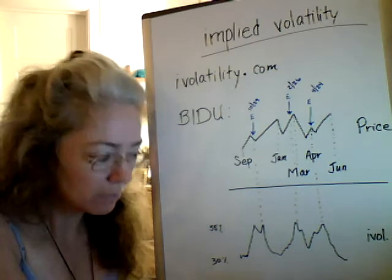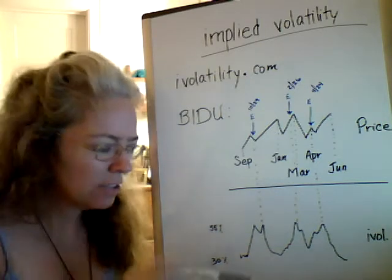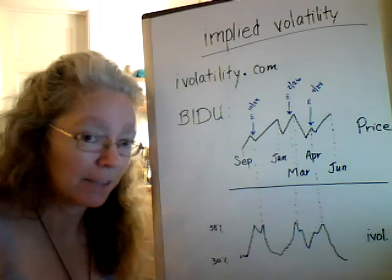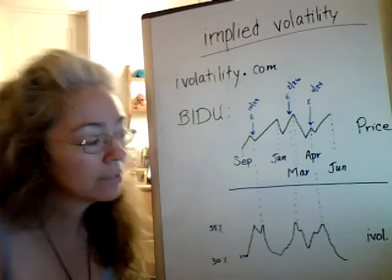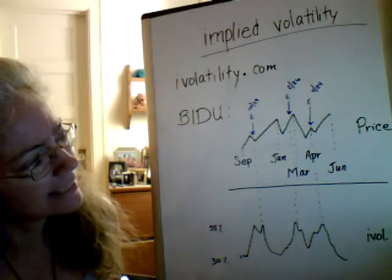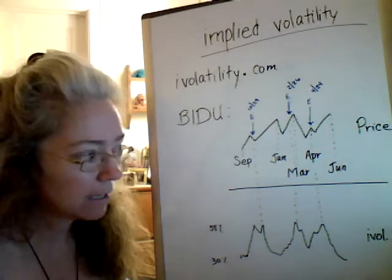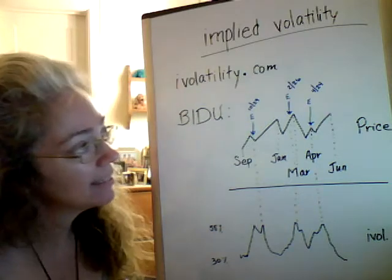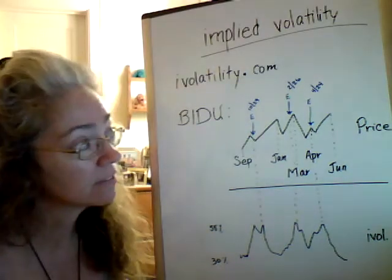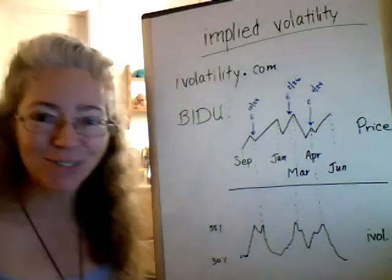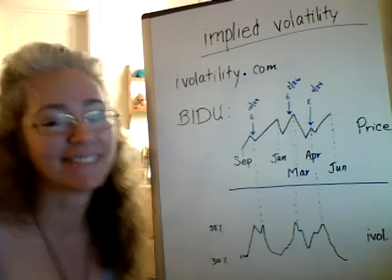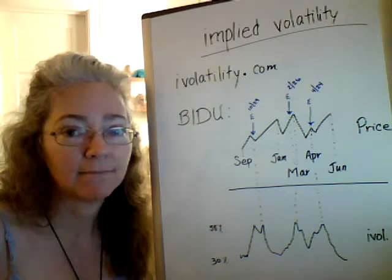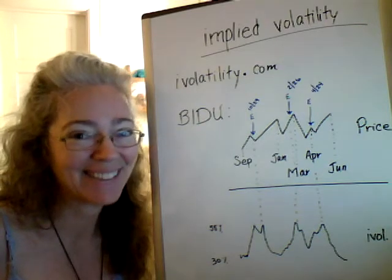Ideally buy at the bottom, but at least make sure the implied volatility is in the lower half. Don't buy when it's floating near the top because you'll pay a lot for that option. So to summarize: buy low, sell high, avoid earnings reports, and frankly — don't trade, because you'll lose your shirt, your pants, your underwear, your socks, and everything else you own. Have a great day!